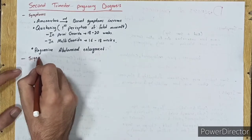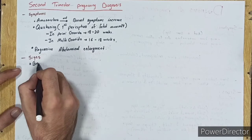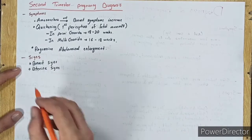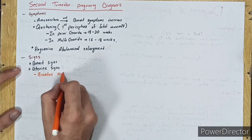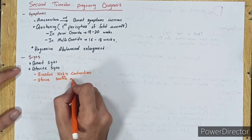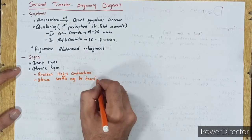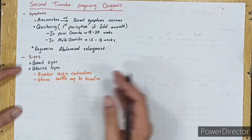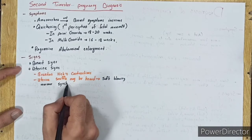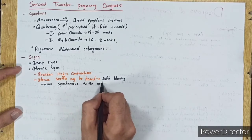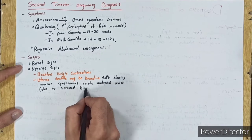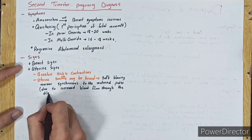Signs: Breast signs, which we studied. Uterine signs include Braxton-Hicks contractions. Uterine soufflé may be heard, which is a soft, blowing murmur synchronous to the maternal pulse due to increased blood flow through the dilated uterine arteries.